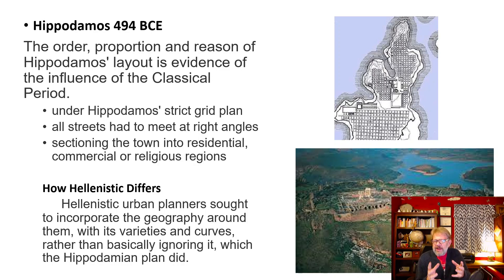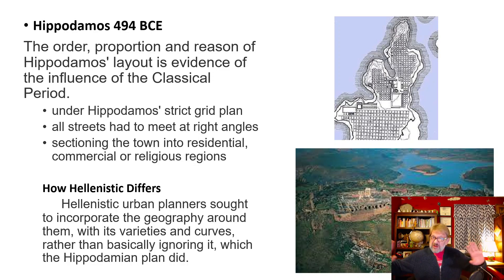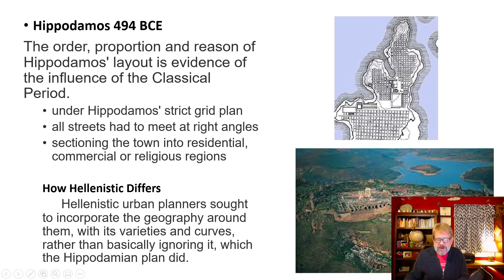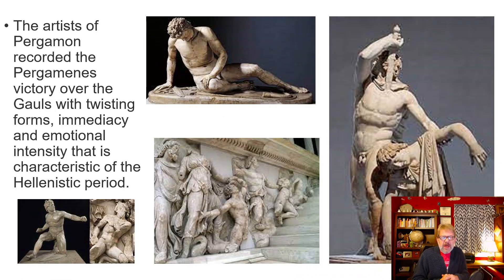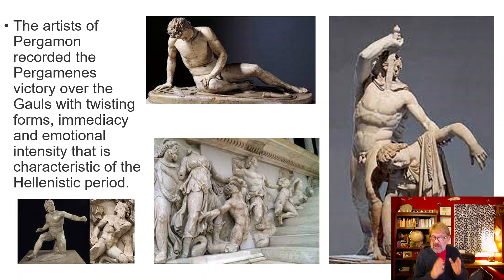In the Hellenistic period, it was all about naturalistic elements. Urban plans start to incorporate the geography around them. You can see in the bottom right a large theater built into the hillside, making natural use of the landscape. The streets and roads are reflective of the environment around them — not true of the Hippodamos plan. Artists of Pergamon recorded Pergamon's victory over the Gauls with twisting forms, showing how art was changing and becoming more emotionally expressive.